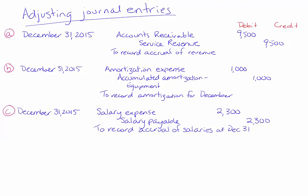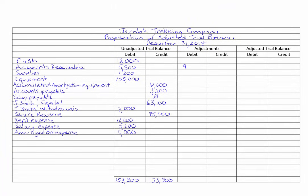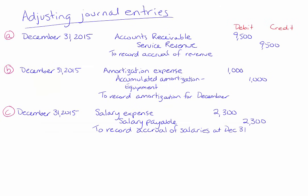Putting these journal entries into the adjustments column is quite easy. We're just going to copy the numbers into the debit and credit columns into the appropriate accounts. Let's deal with journal entry A first. We have debit accounts receivable and credit service revenue for $9,500. On our trial balance, we put accounts receivable debit $9,500 and service revenue $9,500. I'm labeling the numbers with the letter A so we can see which journal entry it belongs to.